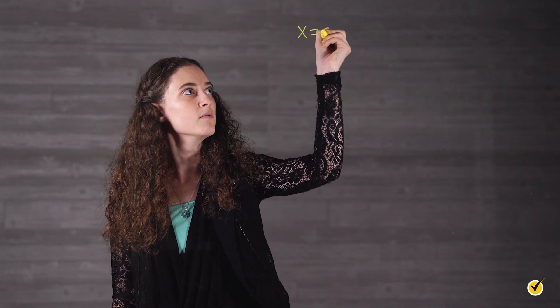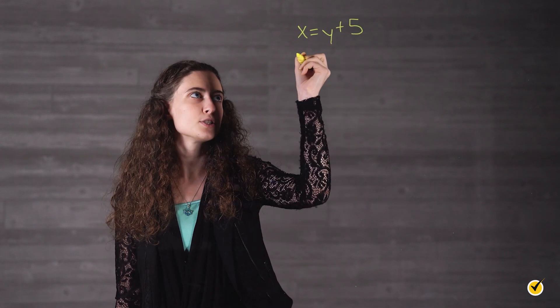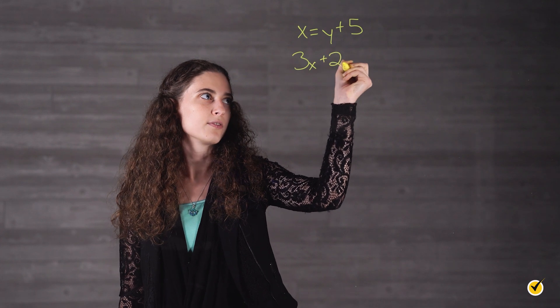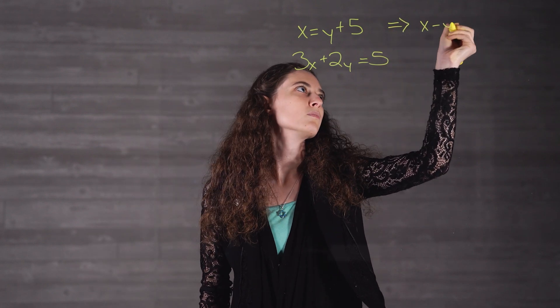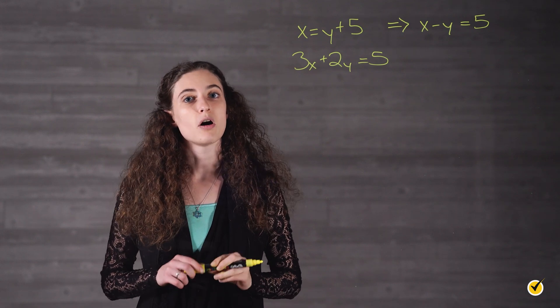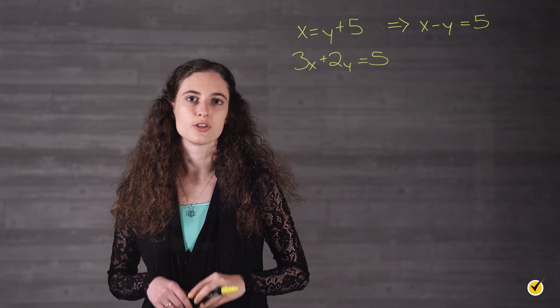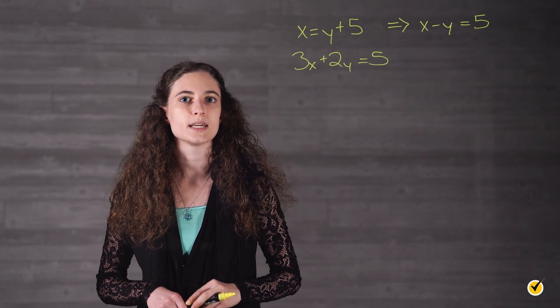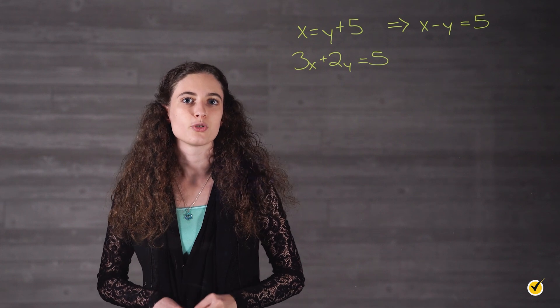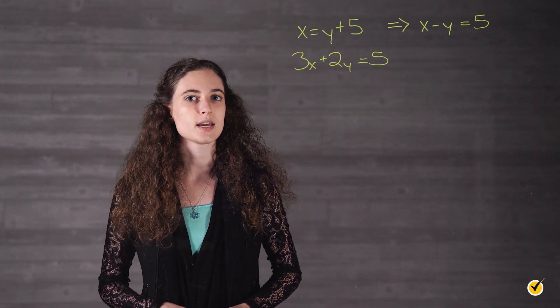Another way to solve systems of equations is using the elimination method. For this method, you first need to manipulate the equations so that the variables are on one side and the constants are on the other. We'll use the system x equals y plus 5 and 3x plus 2y equals 5. Using inverse operations, the first equation becomes x minus y equals 5, and the second equation looks ready to go as is. The objective of the elimination method is that when you add or subtract the two equations, one of the variable terms will be completely canceled out, leaving a much easier equation to solve.